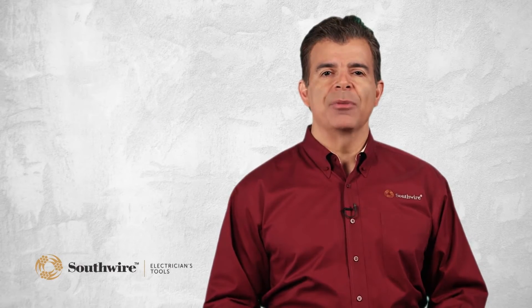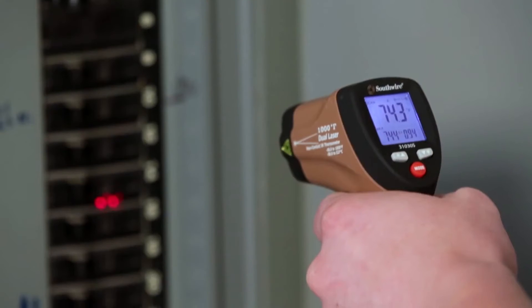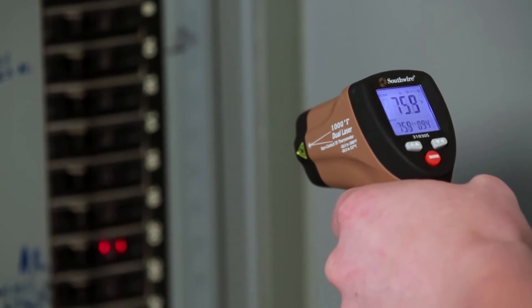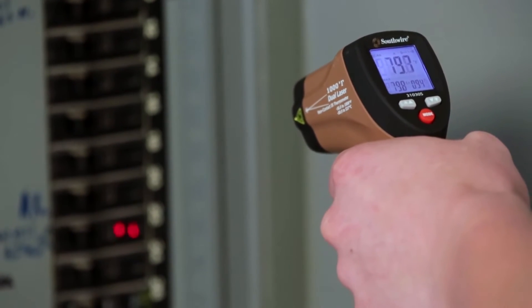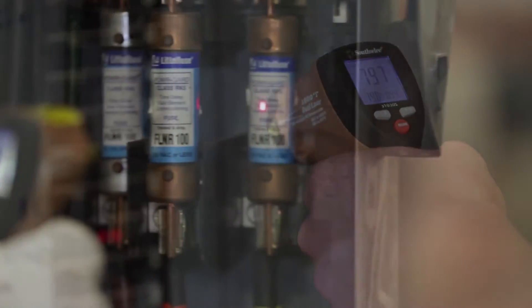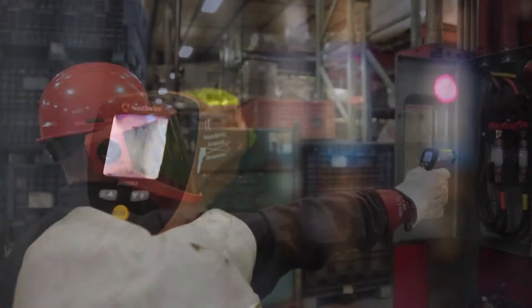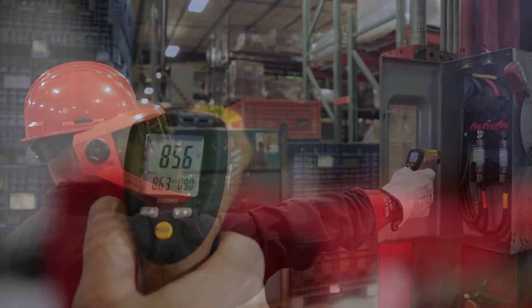Applications for IR thermometers are endless. They can be used to find hot spots in electrical panels caused by loose or corroded connections. Locate fuses, circuit breakers, transformers and other electrical devices that may be overloaded.